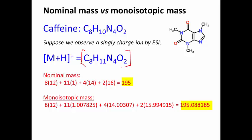The nominal mass is just a quick calculation using the rounded-off numbers. So we see that the nominal mass that we had observed would be 195. The monoisotopic mass is the masses that we're obtaining for the exact masses of those particular isotopes, and you see the number 195.088 and so on.